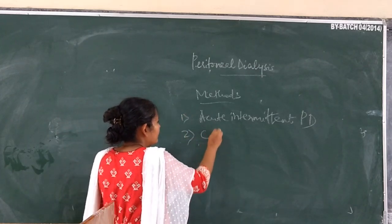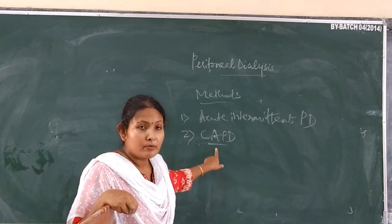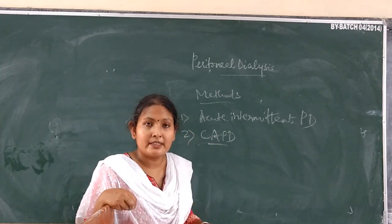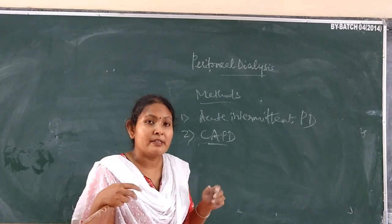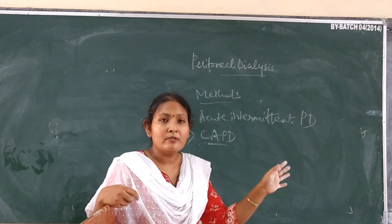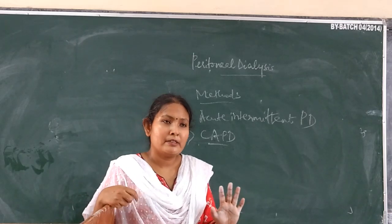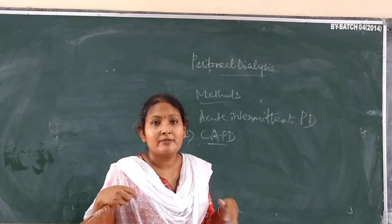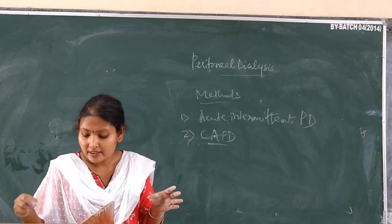The second is CAPD — Continuous Ambulatory Peritoneal Dialysis. Here, the patient is continuously on peritoneal dialysis. 'Ambulatory' means that during the dwell time, when fluid remains inside the peritoneal cavity, all tubings are detached and the patient can move freely. The advantage is the patient does not have to lie down. The disadvantage is that it is a continuous 24-hour, 7-days-a-week process.